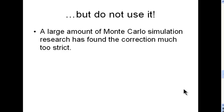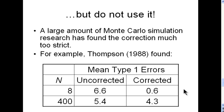And this is where I'm going to make a comment about why it should never be used, despite the fact that you see it almost everywhere in textbooks. Stats programs like SPSS almost force you to use it because it won't even produce the uncorrected Pearson chi-square value or the McNamara chi-square value except in unusual circumstances. It's because there's a large amount of Monte Carlo simulation research that has found the correction to be way too strict. Thompson, in a paper published in 1988, did a simulation study. If you don't know what a Monte Carlo study is, it's a way that we analyze the robustness of statistical analyses.